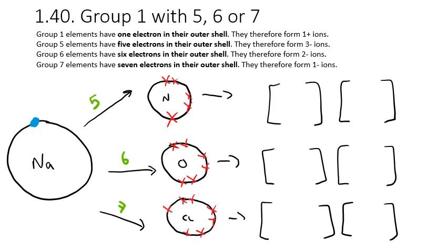Starting with group 1 and combinations with groups 5, 6, or 7: group 1 elements form 1+ ions because they lose one electron. Group 5 elements will gain 3 electrons to get a full outer shell and form 3- ions. Group 6 elements have 6 in the outer shell and will gain 2 to become 2- ions. Group 7 elements have 7 in the outer shell and form 1- ions because they gain one electron. I've selected sodium from group 1, and nitrogen, oxygen, and chlorine to represent groups 5, 6, and 7 respectively.